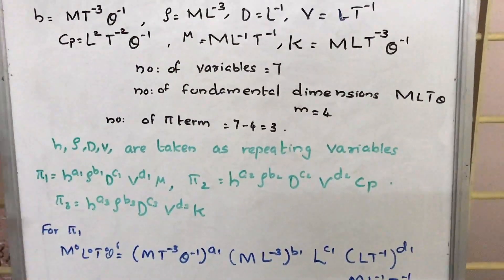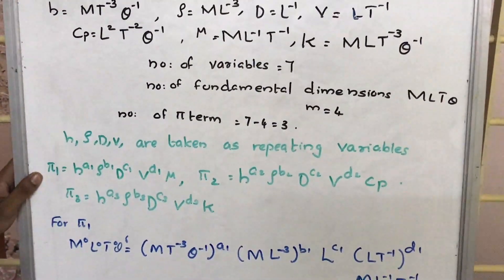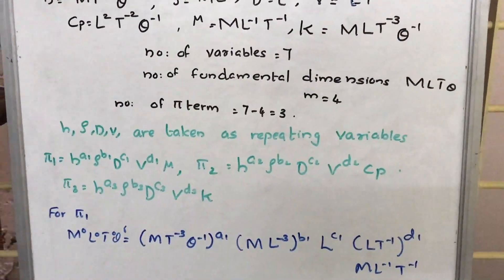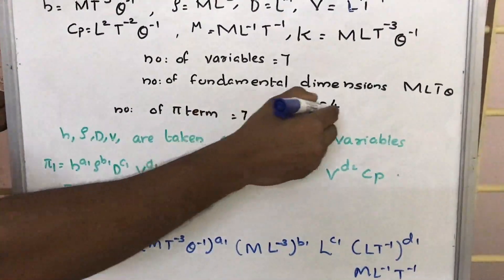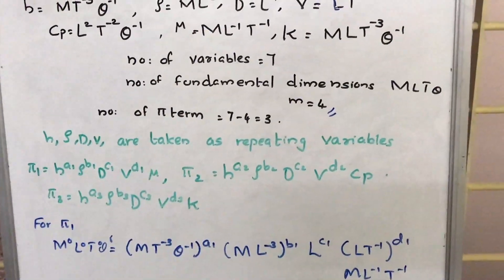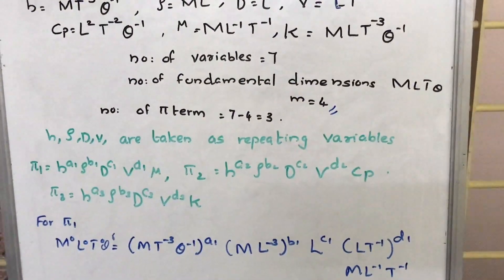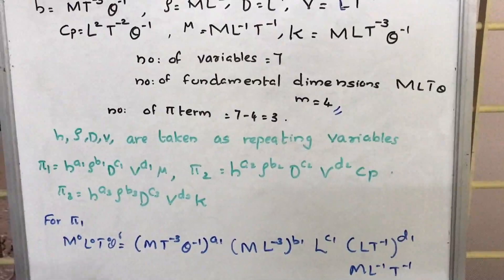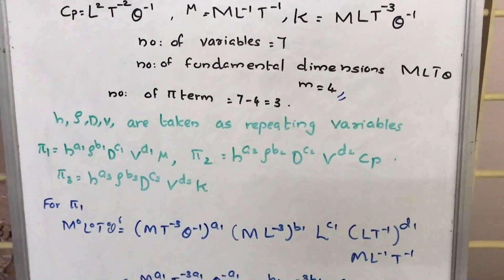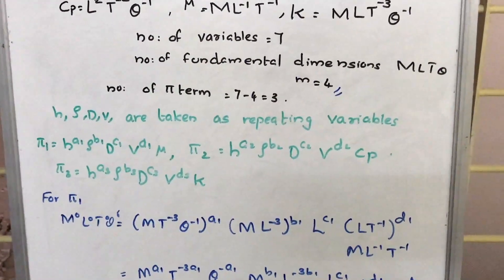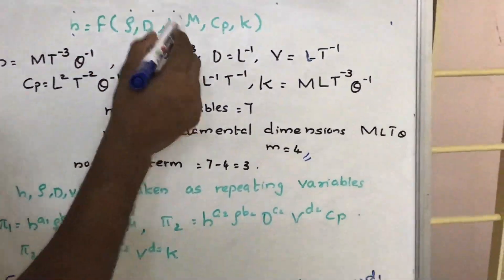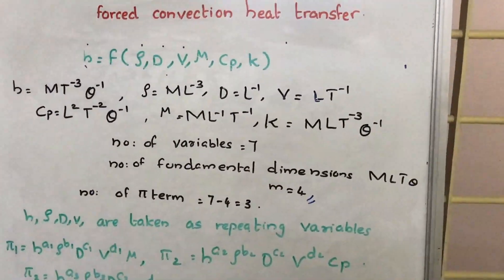In each pi term, there will be repeating variables, and the number of repeating variables is equal to the number of fundamental dimensions, which is 4. So there will be 4 repeating variables present in each pi term. In this particular case, H, rho, D, and V are taken as the repeating variables.